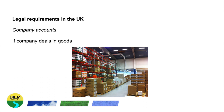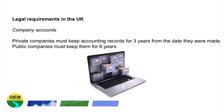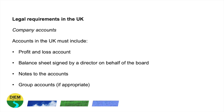Private companies must keep accounting records for three years from the date they were made, and public companies must keep them for six years. Records can be kept in digital or paper format. The actual accounts in the UK must include the profit and loss account, a balance sheet signed by a director on behalf of the board, notes to the accounts, and any accounts applicable to a wider corporate group that the company controls.